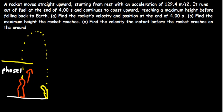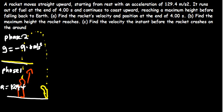In phase one, we have acceleration which is 129.4 m/s². From the point where fuel runs out, continuing upward, I'll call that phase two. In phase two, the rocket is moving under the influence of gravity, where g is negative 9.8 meters per second squared. The maximum height is from the ground all the way to the peak. At maximum height, the final velocity is zero.